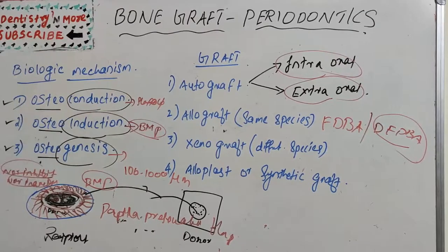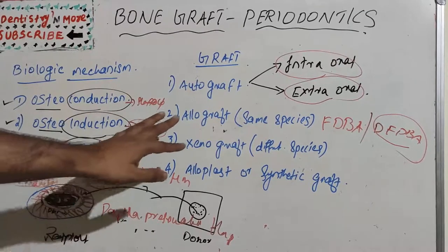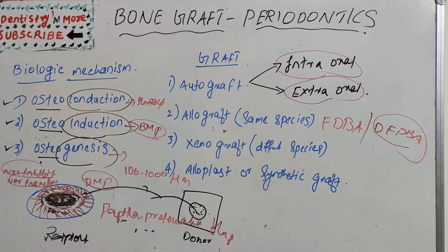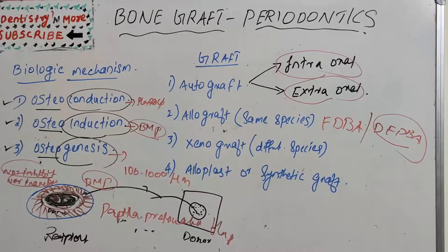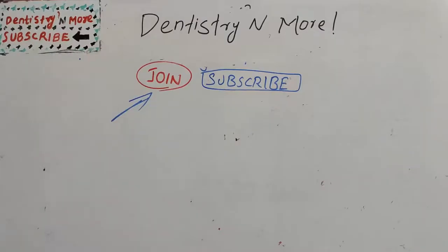To summarize: we discussed the biologic mechanisms — osteoconduction, osteoinduction, and osteogenesis — and various types of graft: autograft, allograft, xenograft, and alloplast or synthetic graft. All of these are very important for exams; each one can be asked as a short note, or the entire topic as a short essay.